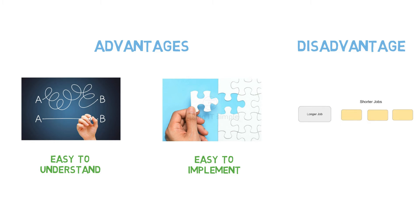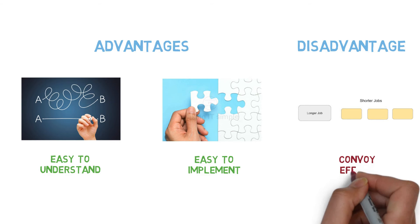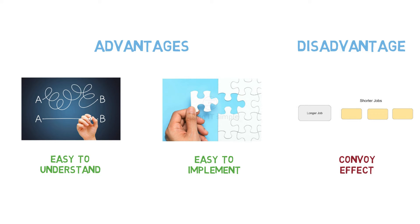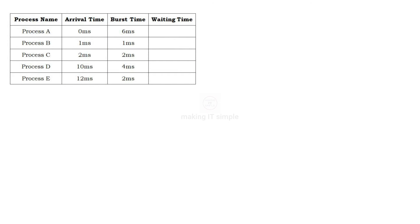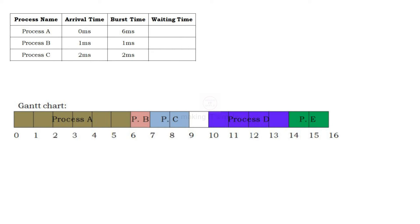The major disadvantage is the convoy effect. Let's understand that using our previous example. This was our table and the following was our Gantt chart. Let's consider just the first three processes to understand the convoy effect. First, let us find the waiting time for each process.